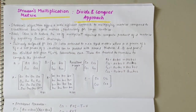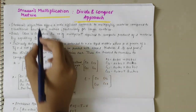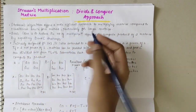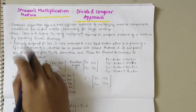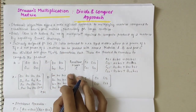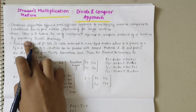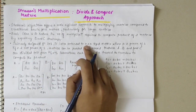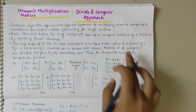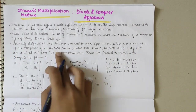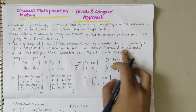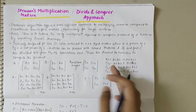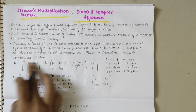Now let's look into Strassen's matrix multiplication using the divide and conquer approach. Strassen's algorithm offers a more efficient approach to multiplying matrices compared to the traditional brute force method, particularly for larger matrices. The basic idea is to reduce the number of multiplications required by exploiting the divide and conquer strategy. It was initially designed for 2×2 matrices and later enhanced to n×n matrices where n is a power of 2. If n is not a power of 2, matrices can be padded with zeros. Matrices A, B, and product C are divided into four n/2 × n/2 sub-matrices.